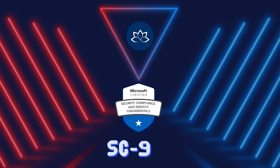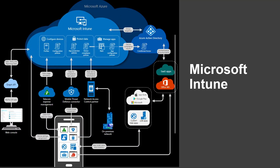Microsoft Intune is part of the Microsoft Enterprise Mobility Plus Security suite, known as EMS. Intune integrates with Azure Active Directory to control who has access and what they can access. It also integrates with Azure Information Protection for data protection, and it can be used with the Microsoft 365 suite — for example, you can deploy Microsoft Teams, OneNote, and other Microsoft 365 apps to your devices.